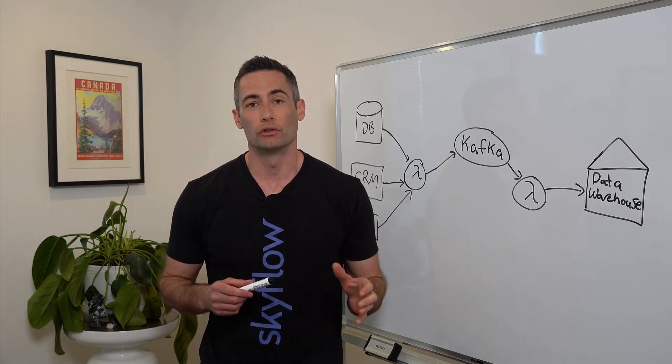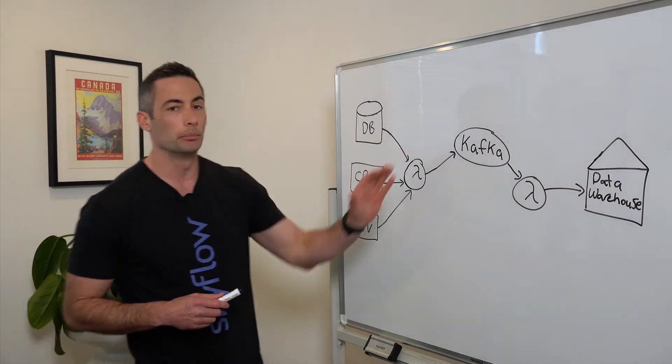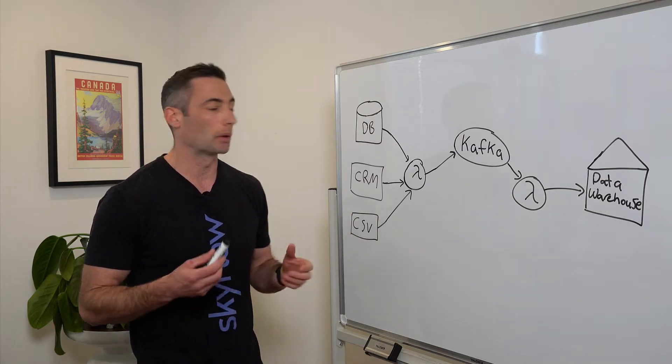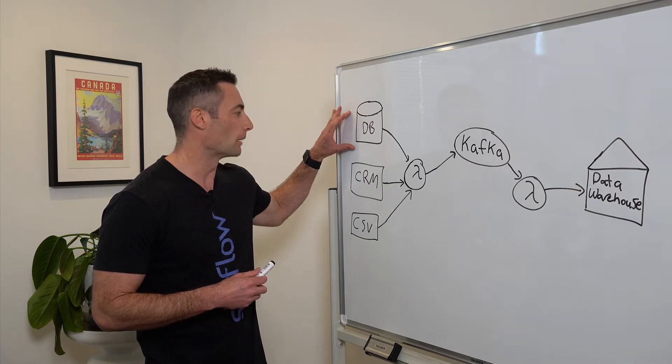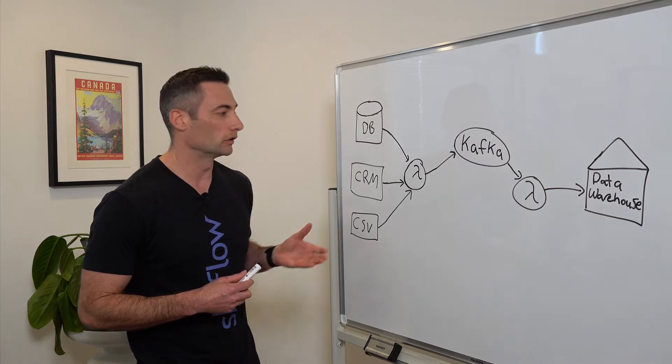Before we jump into the solution though, let's talk a little bit about the problem. I've drawn up a pretty simple analytics pipeline here that you could create using Amazon Web Services or probably some other cloud provider. We have three different sources: a database, which could be our application database, a CRM for our customer data, and a bunch of flat files in the form of CSVs.